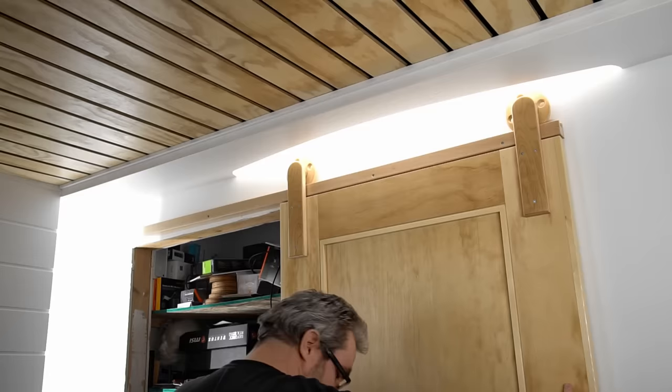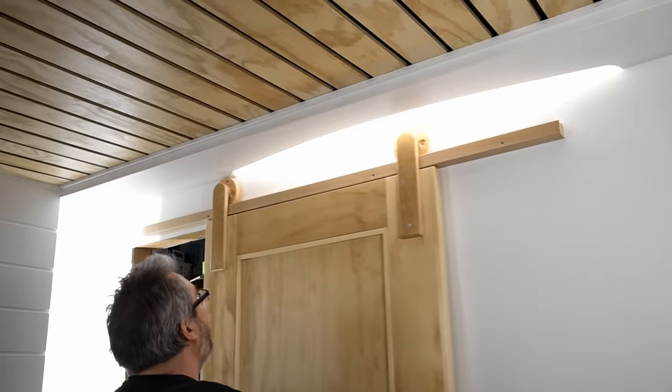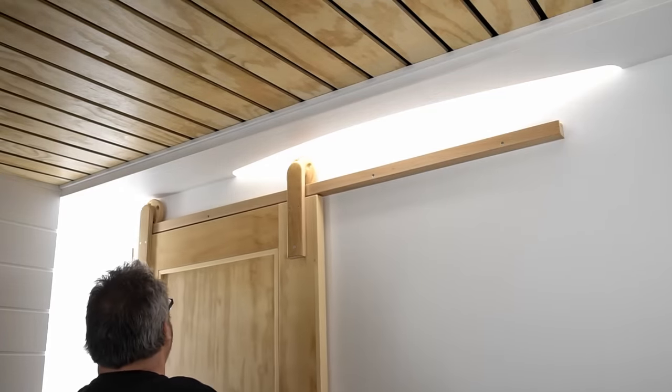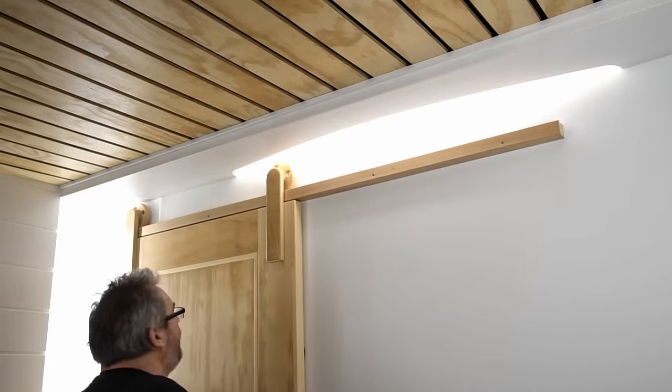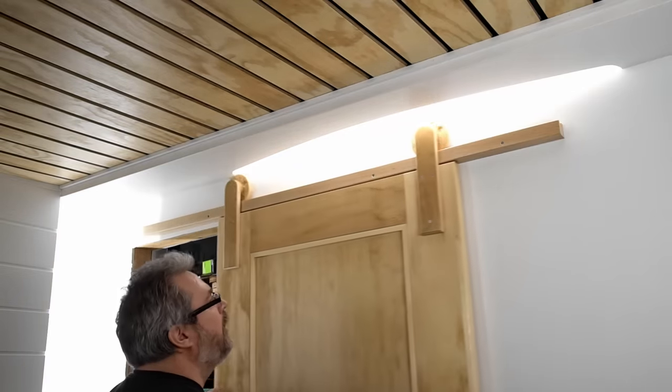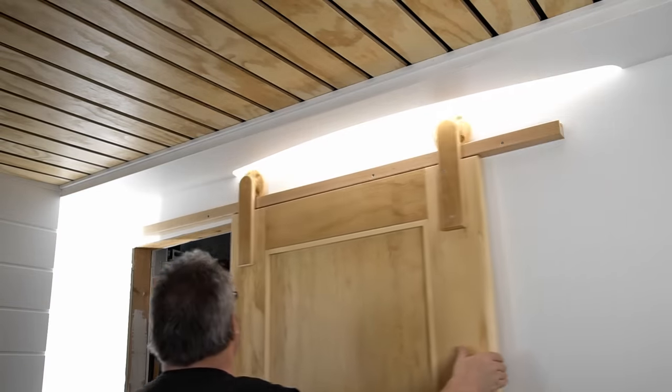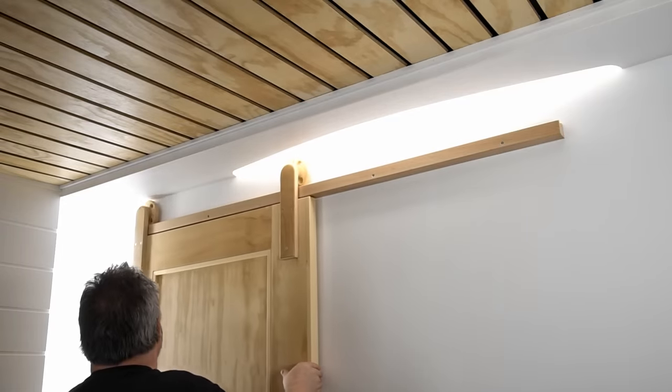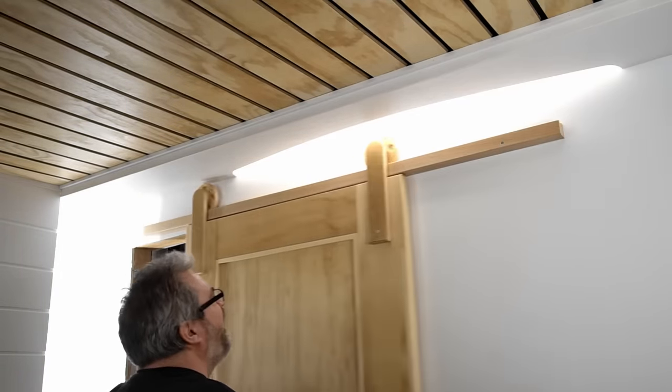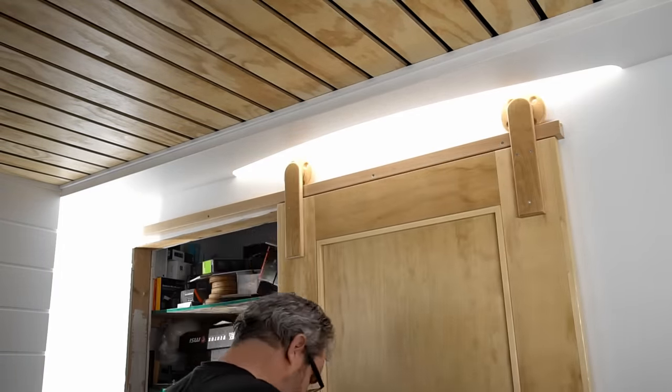So with both hangers installed, I can try it out and see how it rolls. Pretty smooth actually. Like I said earlier, when I take this down again to reinstall it with the trim, what I'll do is I'll take the wheels out of the hanger and I'll get some grease around those axles to make it roll even smoother.